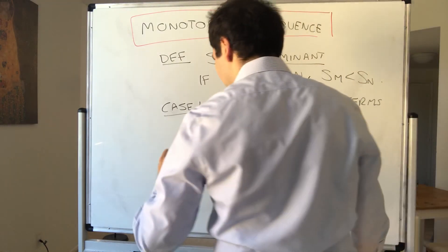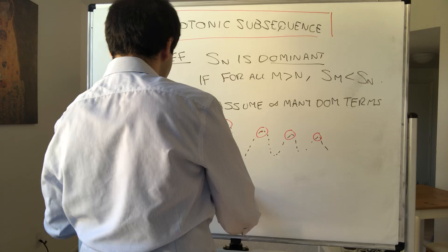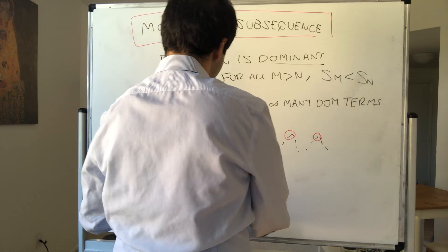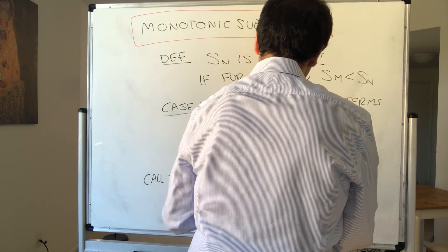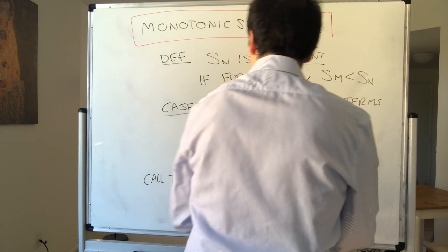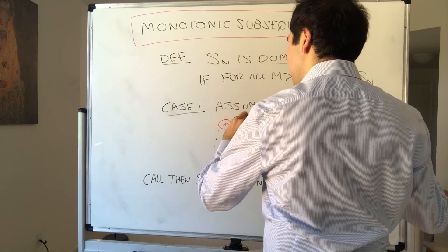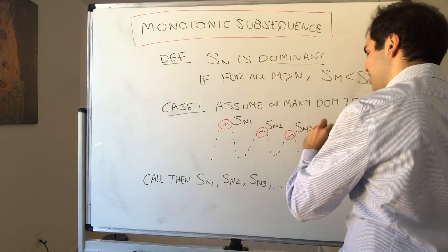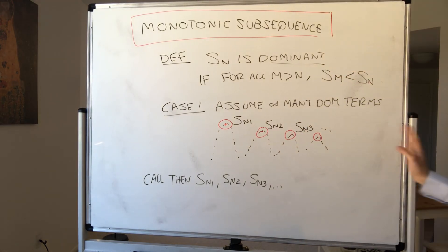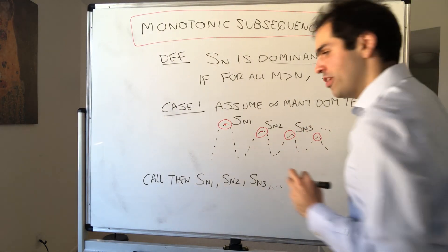Then, very easy, consider the subsequence of all the peaks. And it turns out by definition of dominant, in that way we can get a decreasing subsequence. So label, so call them Sn1, Sn2, Sn3, dot dot dot. So call the first dominant term Sn1, the second one Sn2, Sn3, dot dot dot.